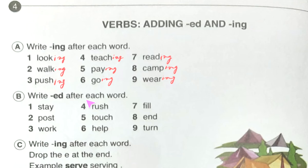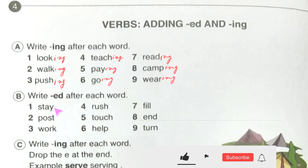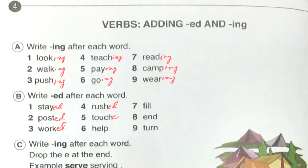Exercise B: write ed after each word. Stay→stayed, post→posted, work→worked, rush→rushed, touch→touched, help→helped, fill→filled, turn→turned.